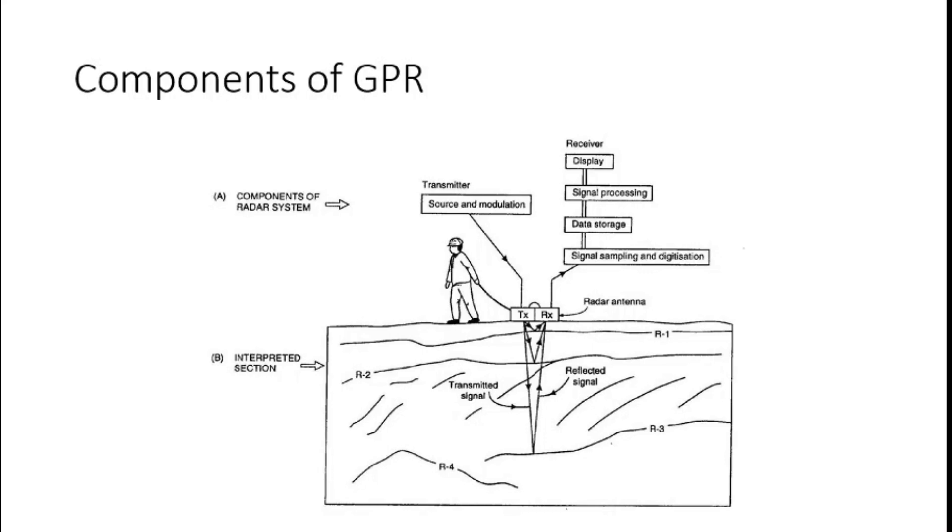So basically in this picture there are four reflectors R1, R2, R3 and R4. The signal will be transmitted back to the receiver according to the dielectric contrast between the layers and recorded accordingly.